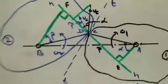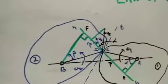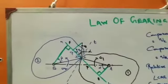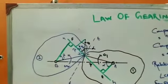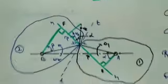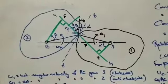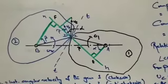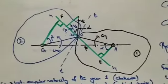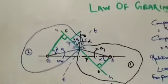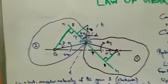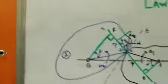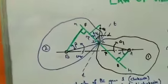The law of gearing states the condition by which a gear can move with a constant angular velocity without sliding or penetrating along the normal. This condition is called the law of gearing.